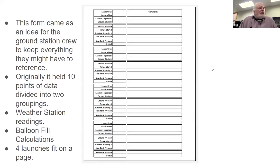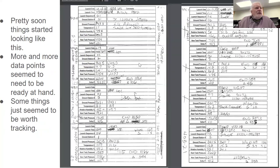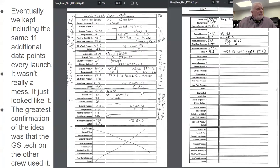As I was working on this, I decided the ground station needed to keep everything so they might have a reference. The original form had about 10 data points grouped into two groups: weather station readings and balloon fill calculations, and four launches fit on a page. I built this in Microsoft Excel because it's a great venue for making forms. As things went along, we started filling these out and more and more data points seemed to be needed — we started filling in stuff in the margins and in the notes. Eventually we noticed we kept including the same 11 data points over and over again.